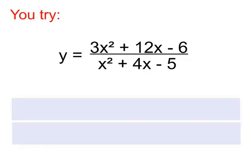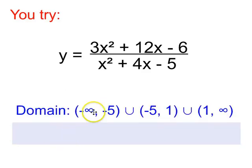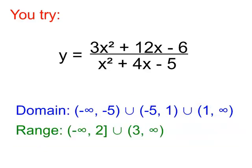Okay, hopefully you've tried your hand at it. If everything went well, you should be getting a domain from negative infinity to negative 5. Negative 5 to 1 and 1 to infinity with parentheses. And yes, you do need to list them in that order. And the range from negative infinity to 2 inclusive using the bracket. And then 3 to infinity. Notice we never use a bracket on infinity because you can never reach infinity. You can never touch infinity. You can just keep going and going and going. See you next time.